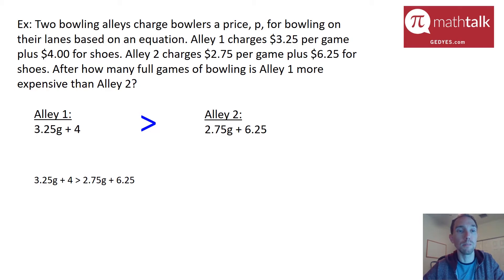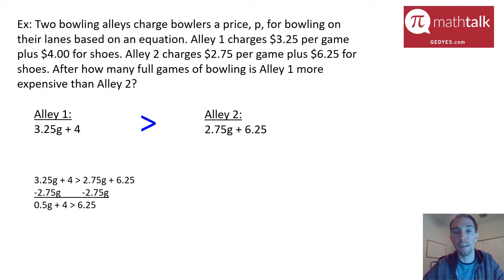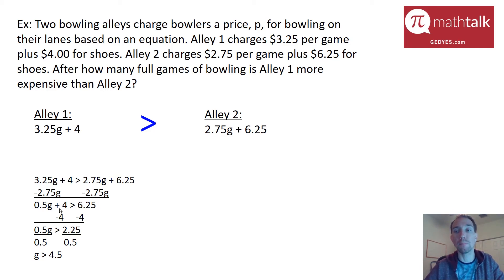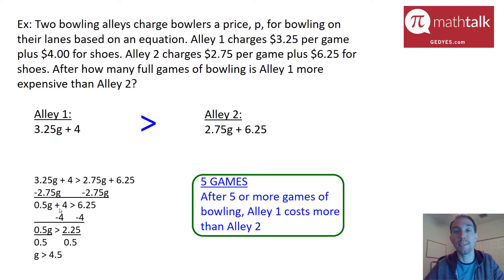Since we have variables on both sides, subtract 2.75G from both sides to get 0.5G plus 4 is greater than 6.25. Then subtract 4 from both sides to isolate the variable, leaving a one-step inequality. Divide both sides by 0.5, which gives G is greater than 4.5. Since you can't bowl half a game, we take the next full number up, which is five games.